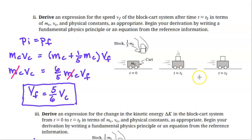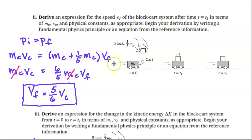At t=t2, the total mass is the block and the cart, so we write (MC + 1/5 MC) times VF, which is the final velocity of the block-cart system. Notice that the MC's cancel out. Solving for VF, we get VF = 5/6 VC.